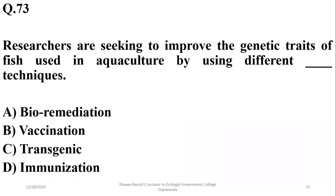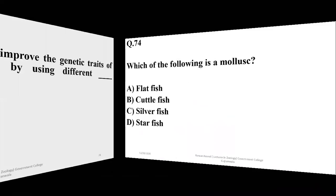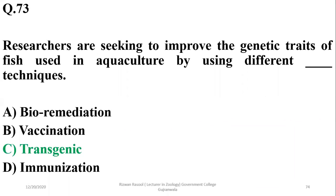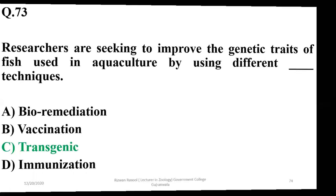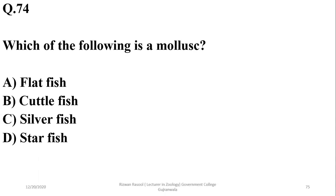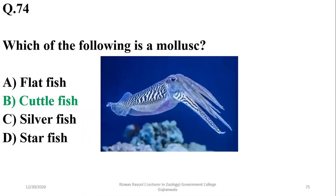Question 73: Researchers seeking to improve the genetic traits of fish used in aquaculture use transgenic techniques or biotechnology techniques such as recombinant DNA technology. Question 74: A mollusk example is cuttlefish — it belongs to class Cephalopoda.